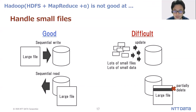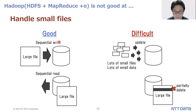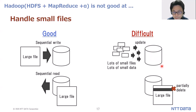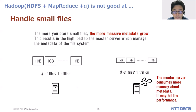Hadoop also has weak points. For example, Hadoop HDFS combined with MapReduce is not good at handling small files. Hadoop is good at handling large files sequentially. However, it is difficult to handle lots of small files or small data. The more you store small files, the more massive the metadata grows. This results in high load on the master server, which manages the metadata of the file system.